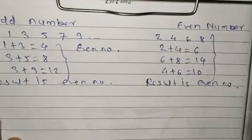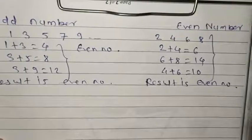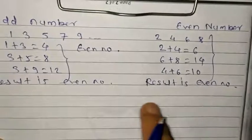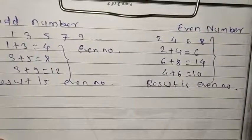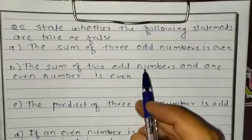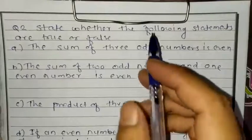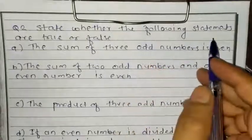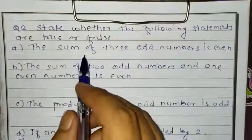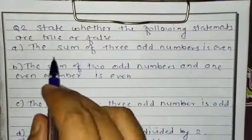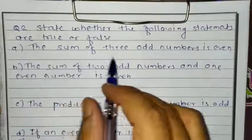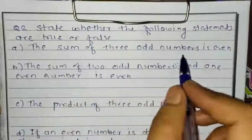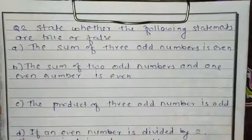This is the answer of question number 1. After that we will see question number 2. Now here we are in question number 2: state whether the following statements are true or false. The first is part A: the sum of 3 odd numbers is even.